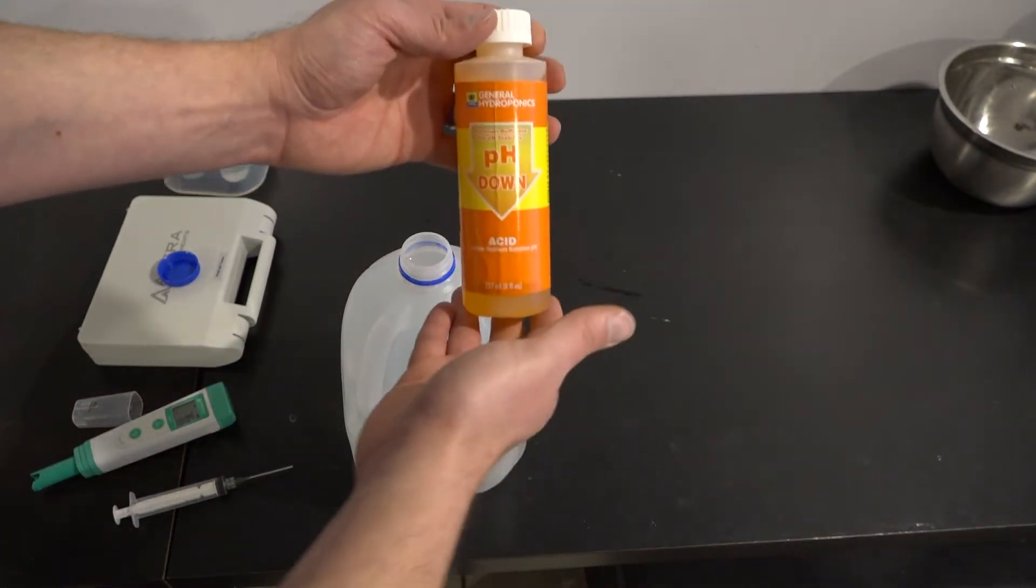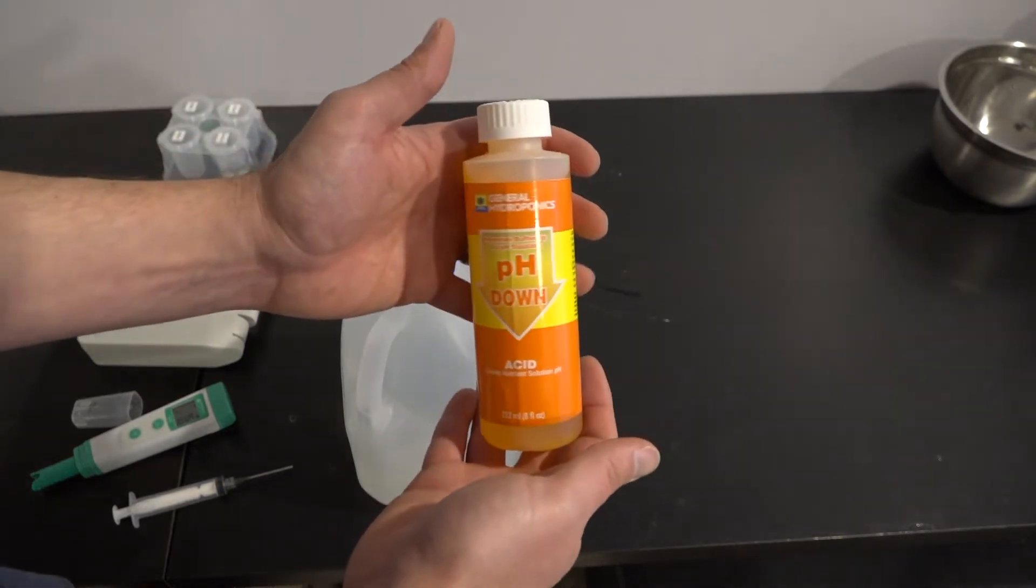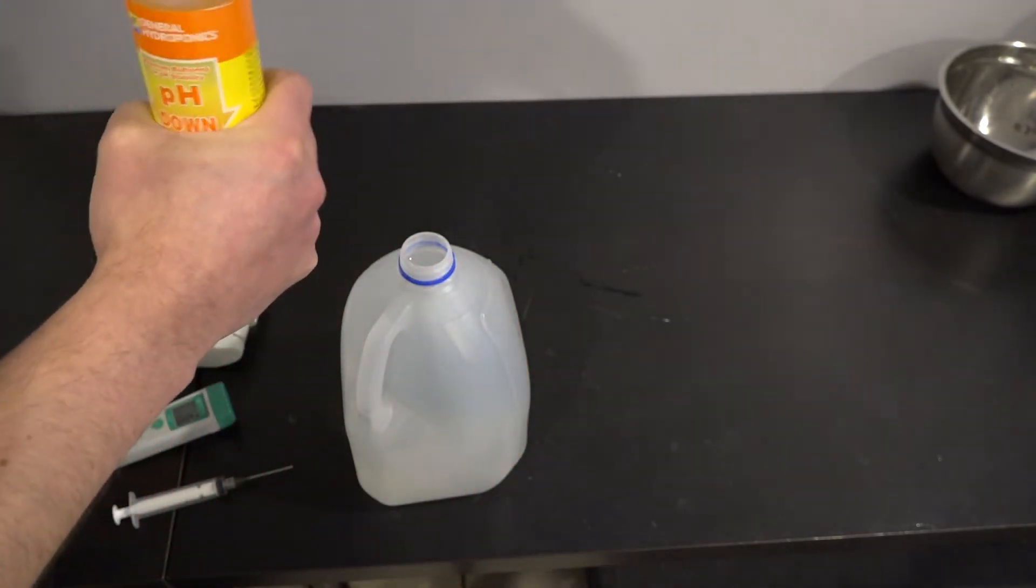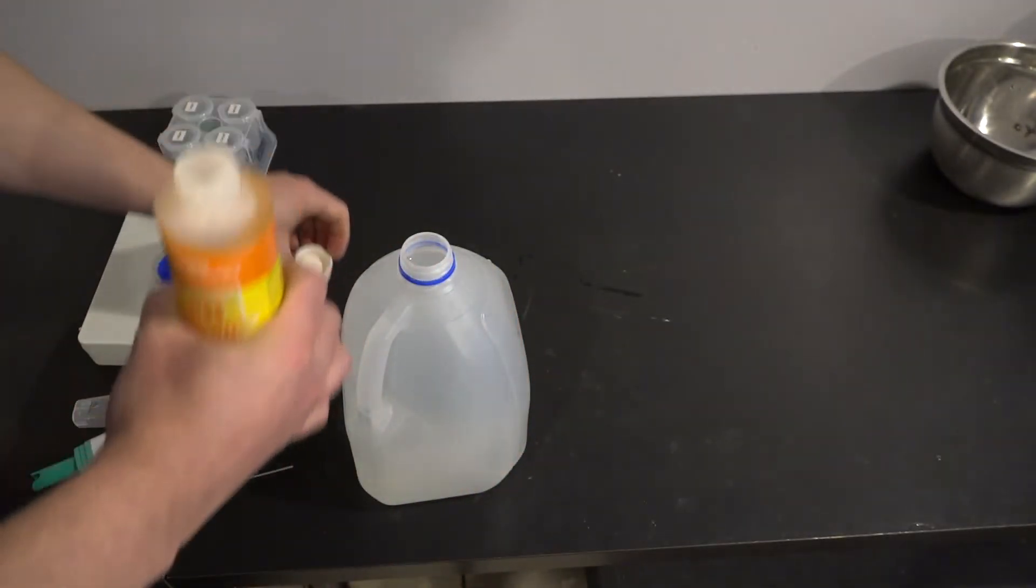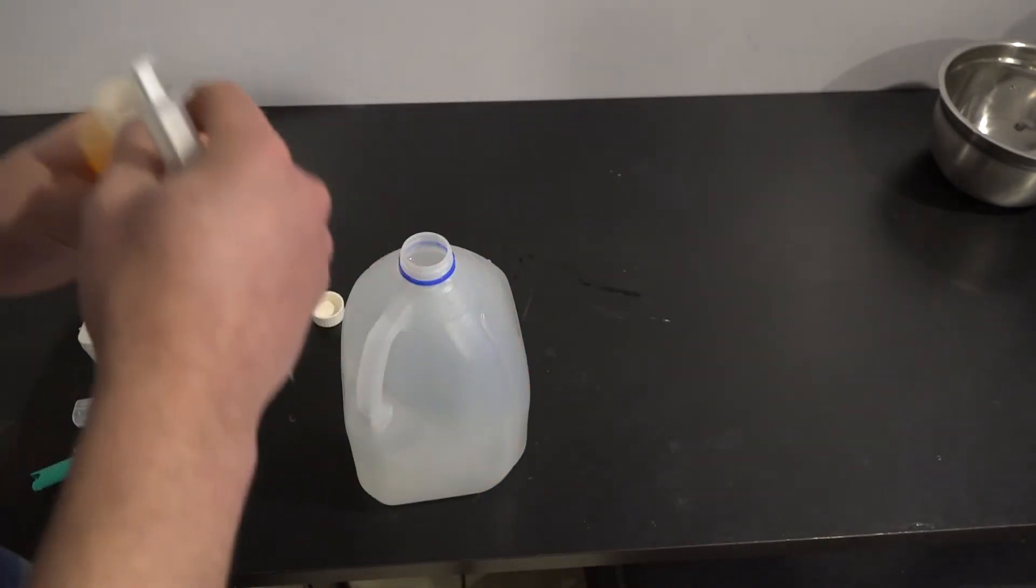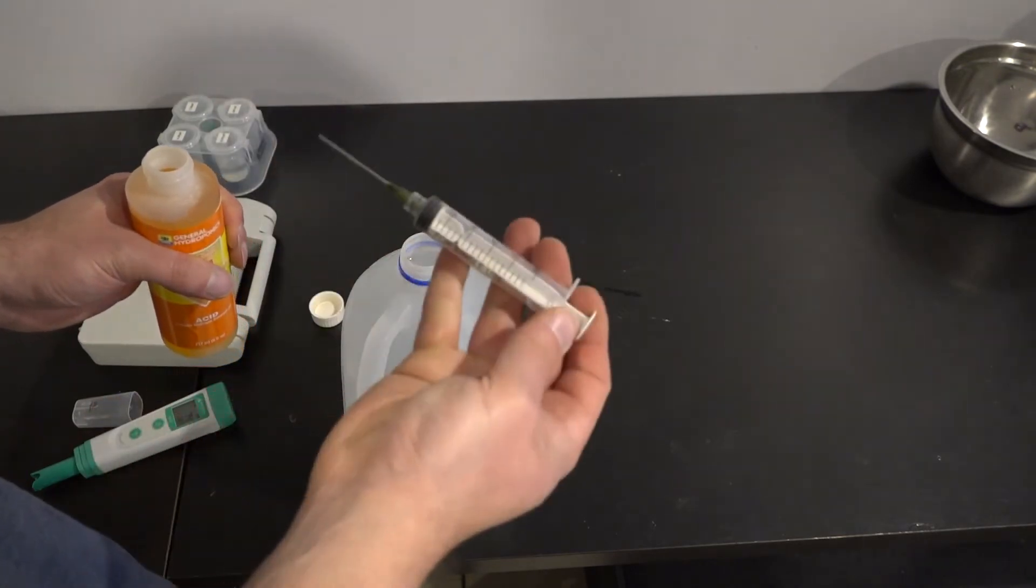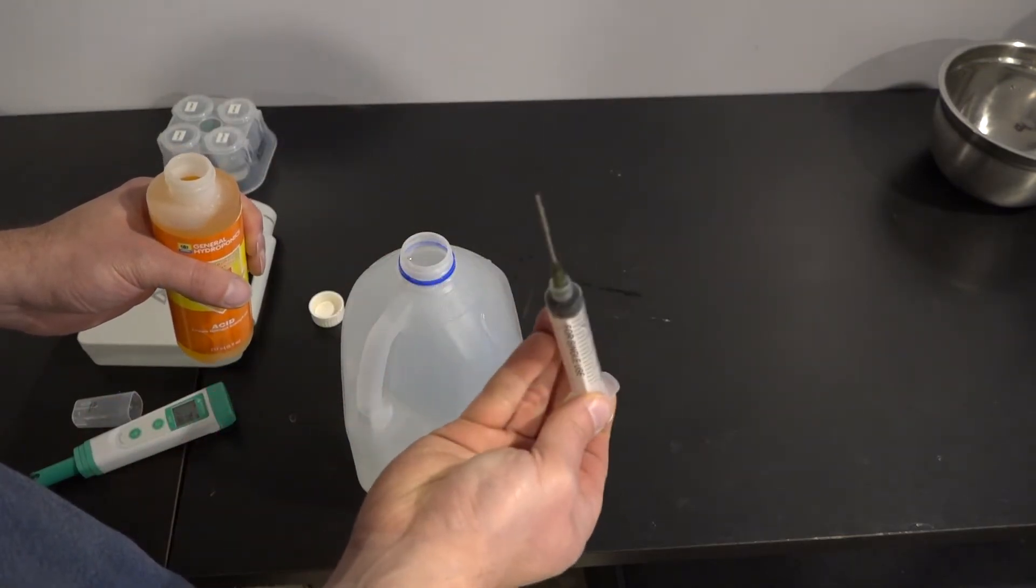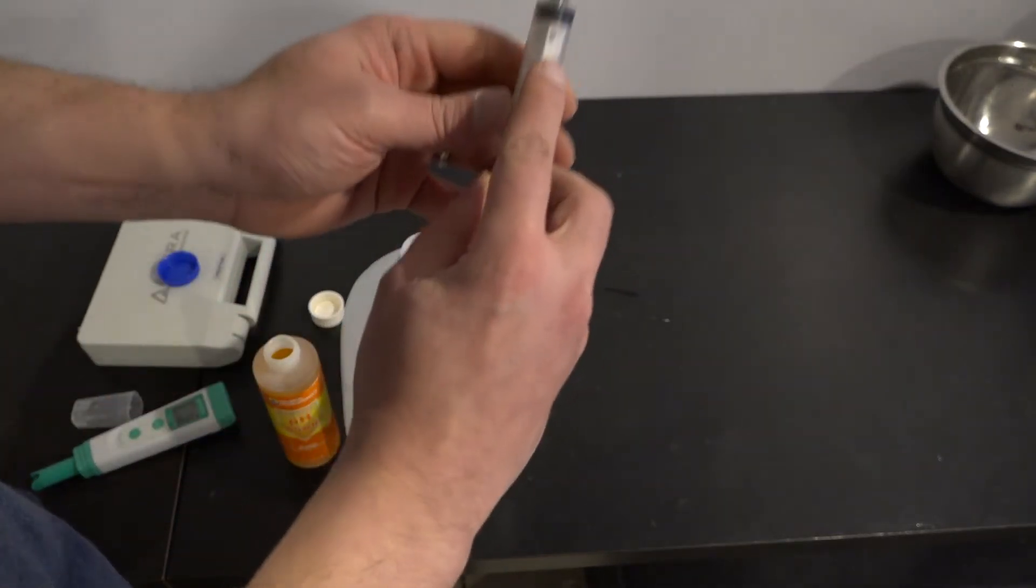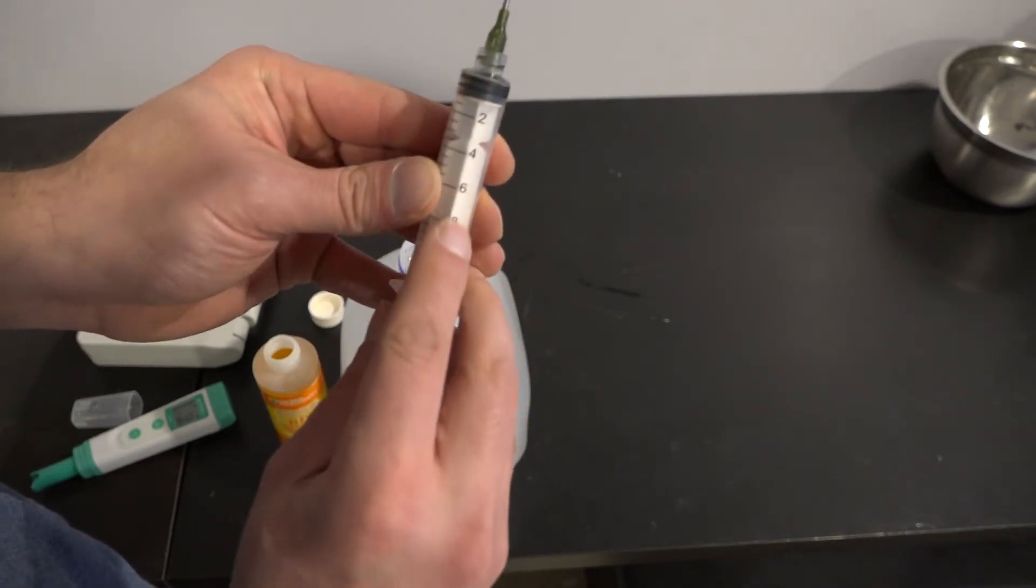Now, this is what I use. I use pH Down by General Hydroponics. There's plenty of other things out there you could use to drop your pH. This is what I use because it's already bottled up for me, and I don't have to worry about trying to source things down. I can just order it online. And this thing will come with a little squeeze dropper. I use a syringe with a blunt tip. The reason I do this is because it's got the milliliters. Milliliters from 2 to 10.